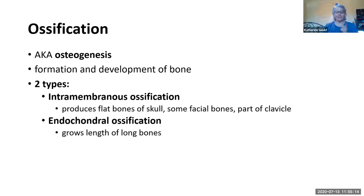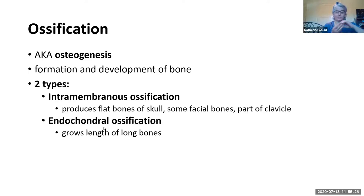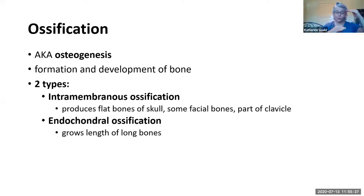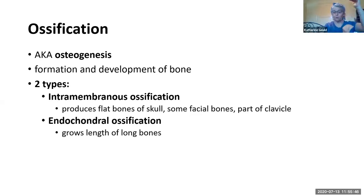The more common form is endochondral ossification. What it does is the body puts down a layer of cartilage first, and then that cartilage ossifies and becomes bone. In your long bones at the epiphyseal plates, you have a layer of cartilage that's constantly growing, and as it grows it ossifies and a new layer of cartilage is built, constantly producing more bone.